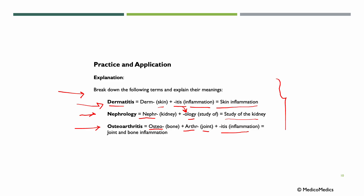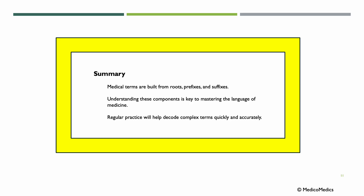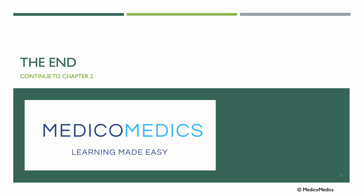By breaking words into their parts, you can figure out their meanings even if you've never seen them before. With time, as you continue your studies and go into the field, a lot of these terms will become second nature. In summary, medical terms are built from roots, prefixes, and suffixes. Understanding these components is key to mastering the language of medicine. Regular practice will help decode complex terms quickly and accurately. Think of medical terminology as a code — once you know the key pieces, it's easy to understand what doctors and nurses are talking about. And that's the end of this lecture. Continue now to chapter 2.